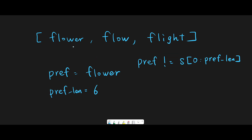First, create a prefix and use the first string, in this case flower. Prefix length should be the length of flower, which is six. We iterate through all words one by one from index one. First we compare flower and flow. The condition is: prefix is not equal to the new string from index zero to prefix length. If this is true we make the prefix shorter one by one. They are different, so six becomes five and we remove 'r'.